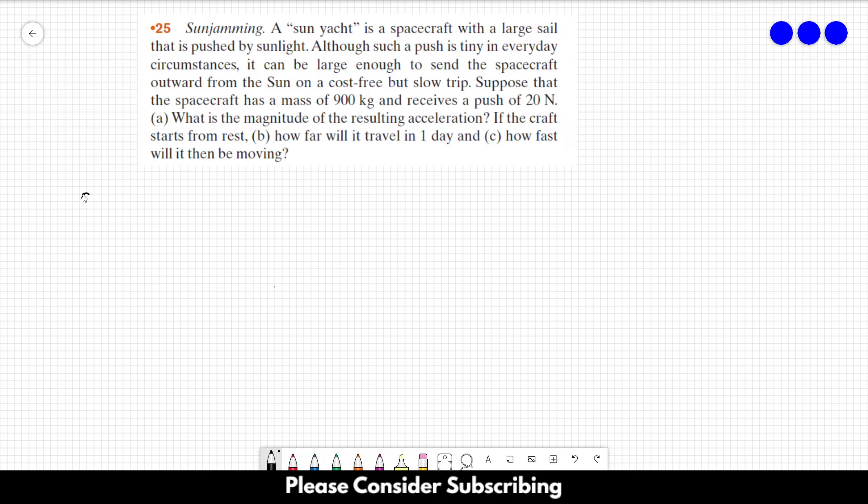So the first thing that we have to find is the acceleration of the spacecraft. Let's remember that force is equal to mass times acceleration, so acceleration is equal to force over mass. The force in this case is 20 N and mass is 900 kg. So if we do this calculation, we would find 0.022 meters per second squared. That's the answer of letter A.